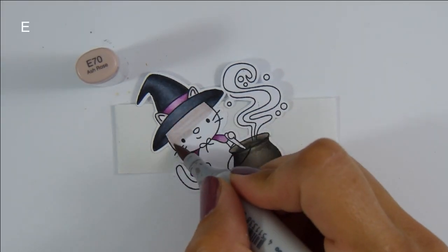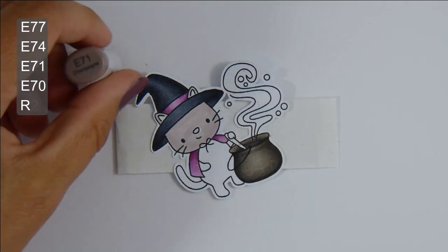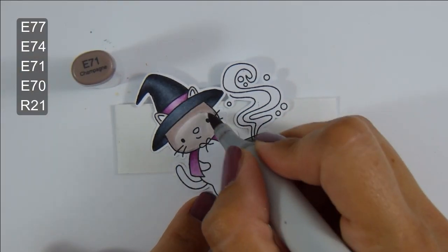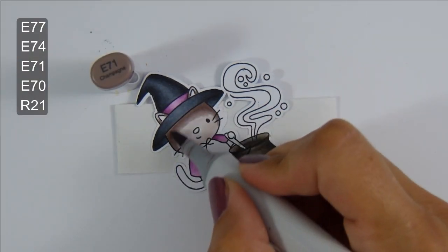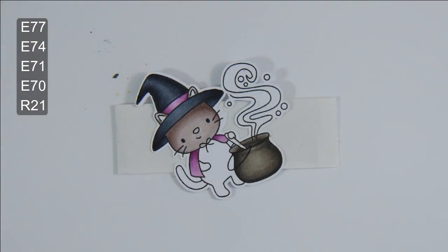Coming in with some E70 markers for the body of the cat. I sometimes struggle to blend these colors, but today everything was working in my favor and I was really happy with the blends I got.